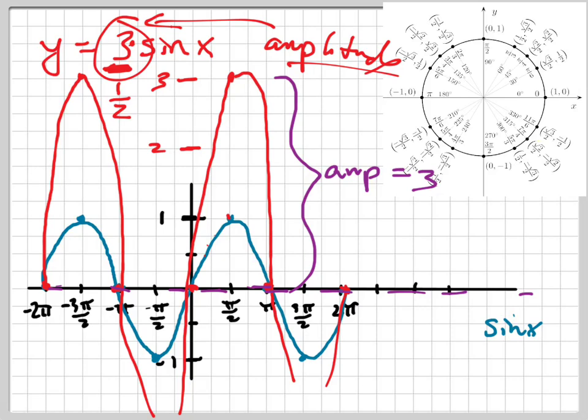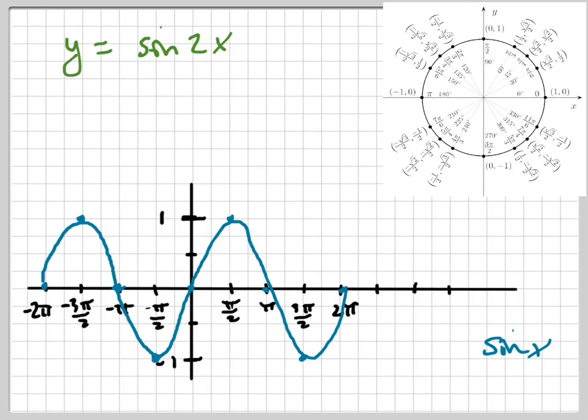Alright, now let's take a look at what happens if we have a number on the inside with the x. This is going to affect the period, which means it's going to affect the horizontal shape of the graph or distance of the graph.